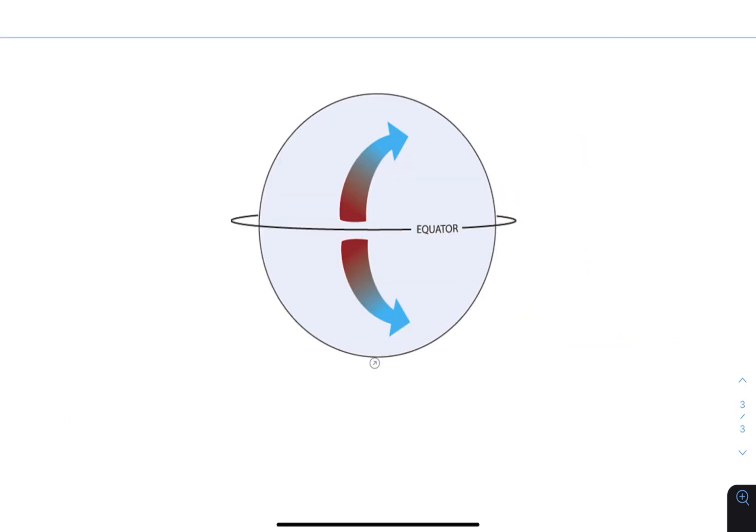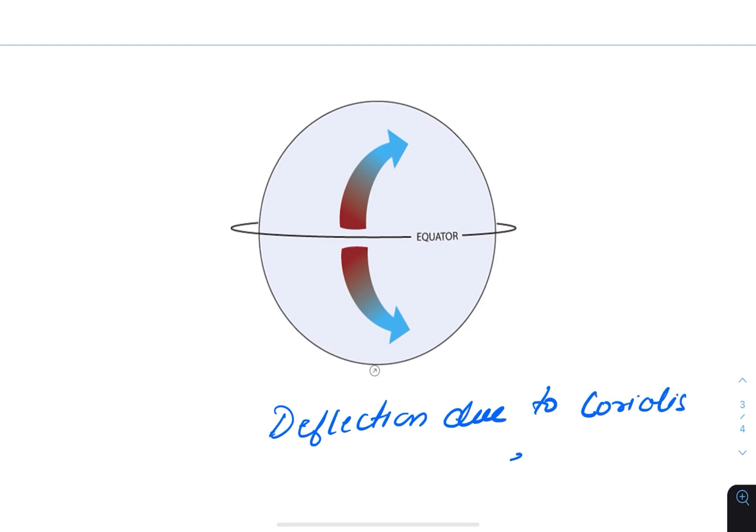The deflection of the atmosphere sets up complex global wind patterns which drive surface ocean currents. This deflection is called the Coriolis effect.